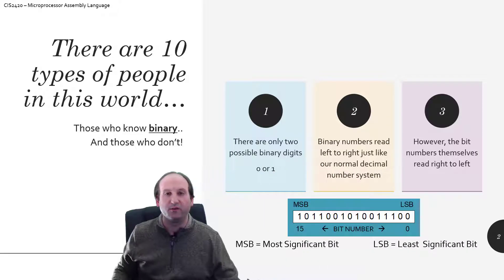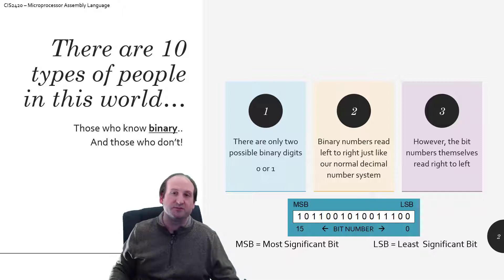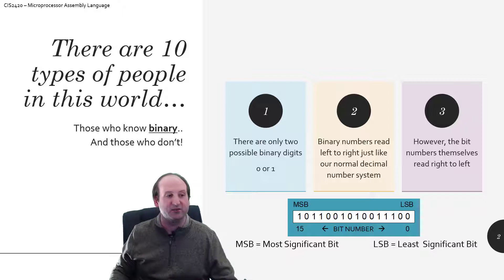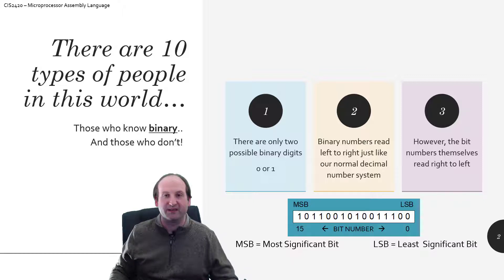When we work in our normal base-10 decimal number system that we've been using our whole lives, we have digits 0 through 9. But binary is defined as relating to, composed of, or involving two things. So a digit of binary is only represented with one of two possible values: a 0 or a 1.